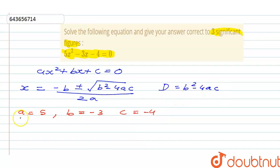First of all let's find D. So D is basically b² - 4ac. So b² that is (-3)² is 9 minus 4 times a is 5 times c is -4. So it is going to give us 9, 4×5 is 20, 20×4 is 80, so plus 80 equals 89.